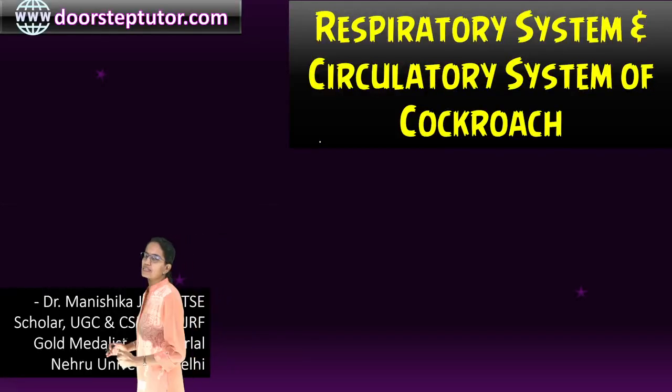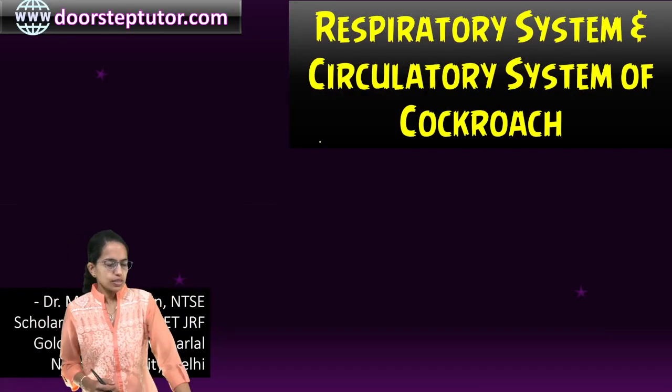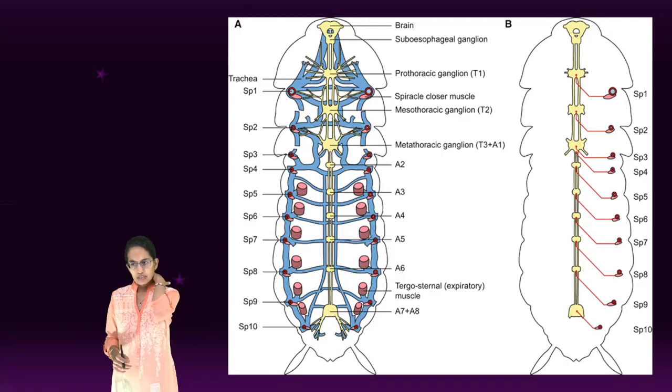Let's talk about the respiratory and circulatory system of the cockroach. The first to begin is the respiratory system.